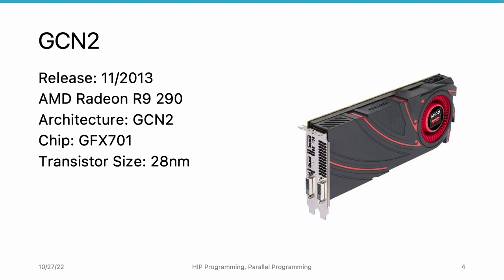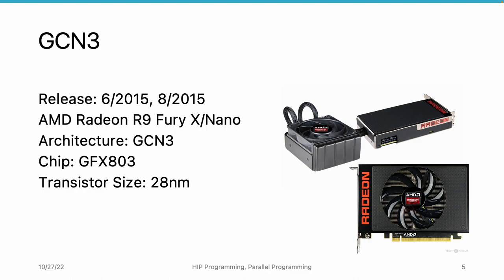Be careful that GFX701 is not one-to-one mapped with the R9290 — this chip may also support other GPUs. About one and a half years later, in June and August 2015, AMD released the GCN3 architecture. The two GPUs are named FuryX and FuryNano, both supported by GFX803. The only difference is that FuryX is cooled by water while FuryNano is cooled by a fan. They support different base frequencies, so FuryX runs slightly faster and generates slightly more heat. The transistor size is still 28nm technology.